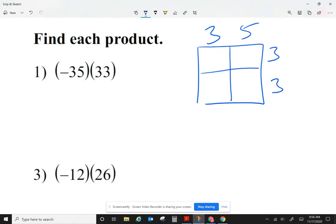Notice how I wrote my numbers. I'm multiplying them. I'm ignoring the signs for right now. I'm just going to multiply 35 times 33. Now each of my boxes, let me cut it in half. Each of my squares, I'm going to cut it in half. Now for each of my squares, I'm going to multiply the number on the top times the number at the side.